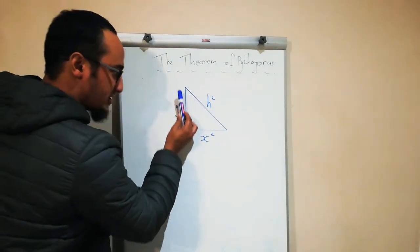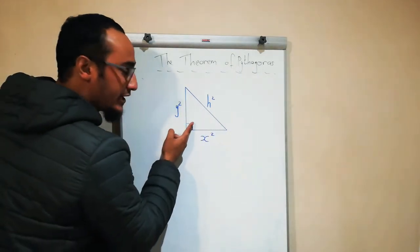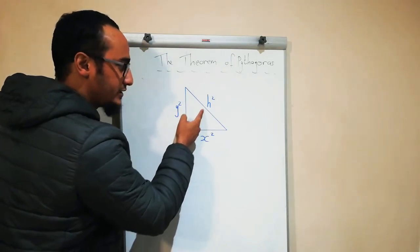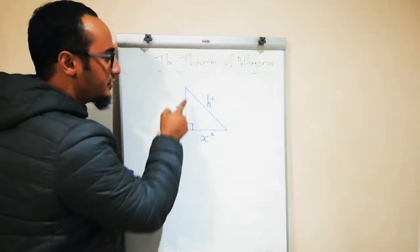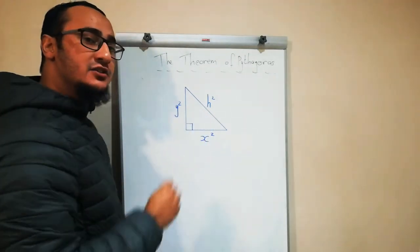And opposite my right angle would be the hypotenuse of my triangle. In other words, this hypotenuse is the longest side of my triangle.